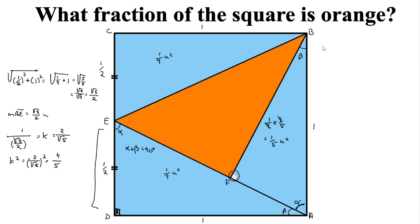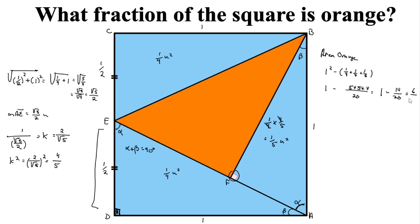So now all we need to do to find the area of our orange triangle is take the area of our square — 1 — and subtract the areas of all three blue triangles: 1 quarter, 1 quarter, and 1 fifth. Converting to twentieths: that's 5/20 plus 5/20 plus 4/20, so 1 minus 14/20, which gives us 6/20, and we can simplify that to 3 tenths.